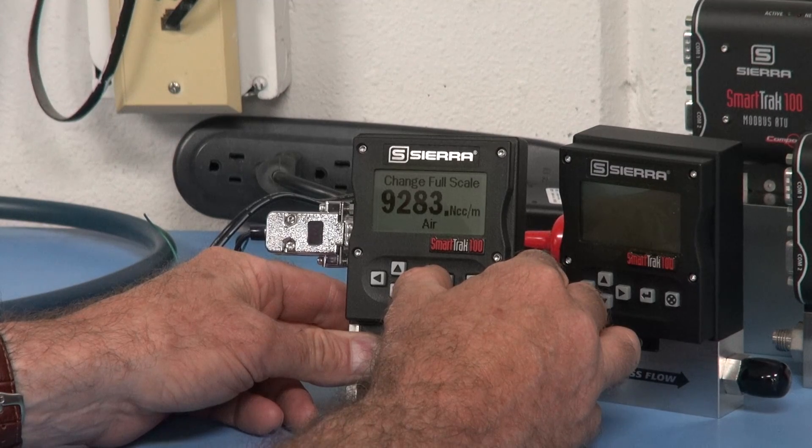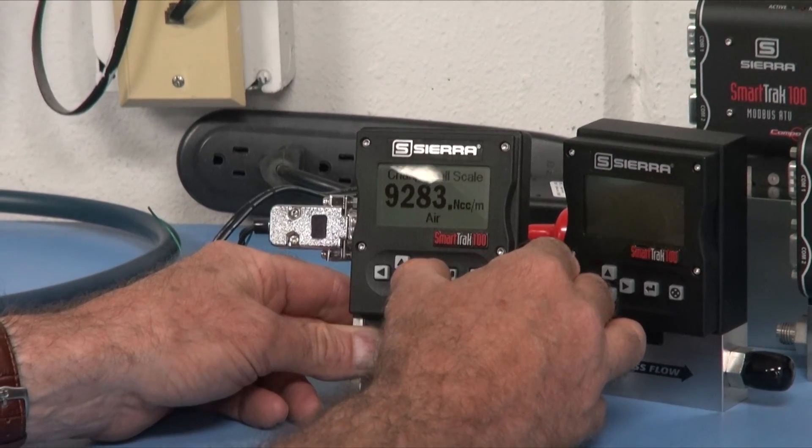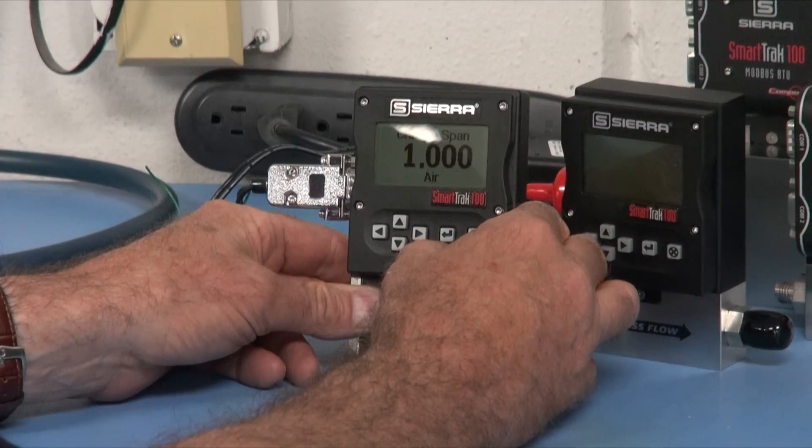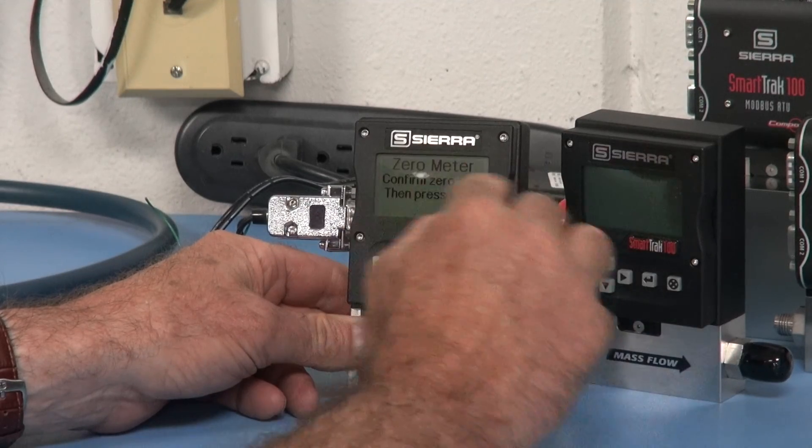Here's the full scale. You can change the full scale if you'd like, so that will scale your analog outputs. You can change the span. Right now it's set up at one, which is how it comes from the factory. And lastly, you can zero the meter.